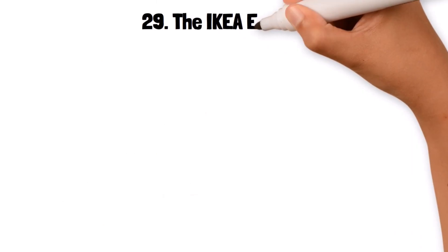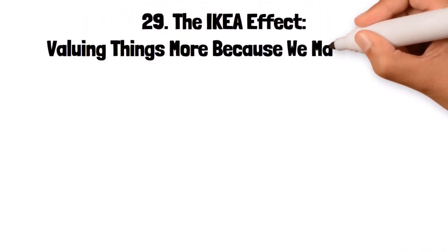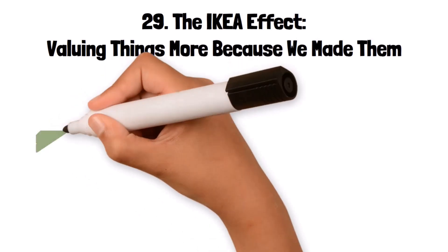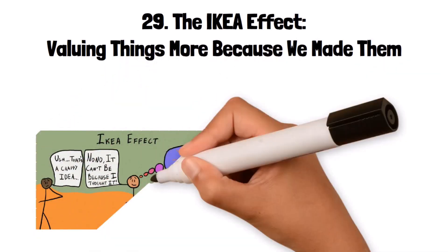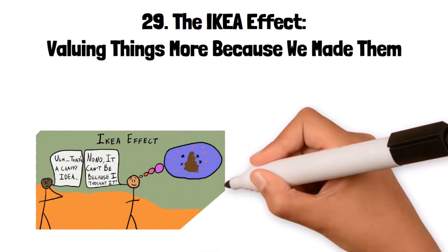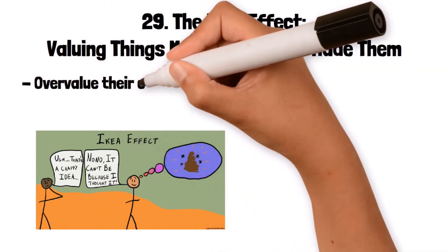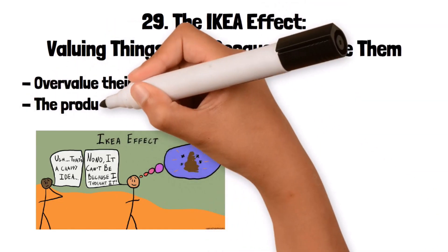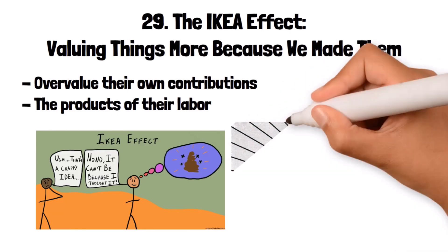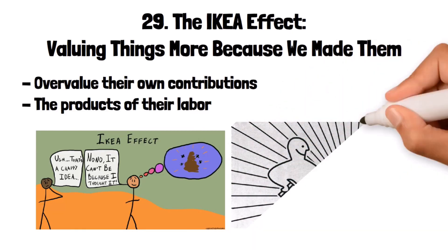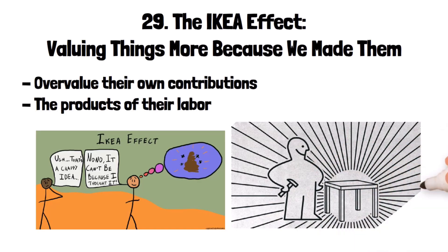29. The Ikea Effect: valuing things more because we made them. The Ikea effect is the tendency to place a disproportionately high value on things that we have partially created ourselves. This bias leads people to overvalue their own contributions and the products of their labor. For example, someone might value a piece of furniture they assembled themselves more highly than a similar pre-assembled item, simply because they put effort into building it.